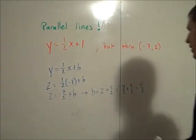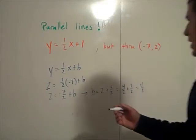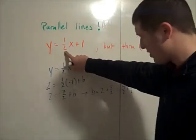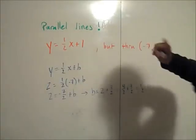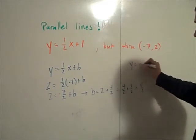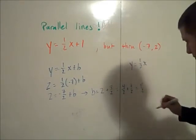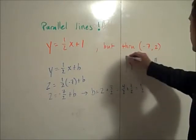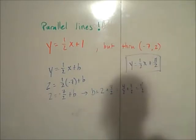11/2 or 5.5. So the equation of my line that is parallel to y equals 1/2x plus 1 but through the point (-7, 2) is y equals 1/2x plus 11/2. That's it.